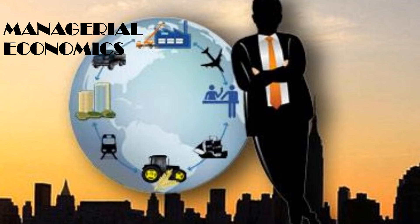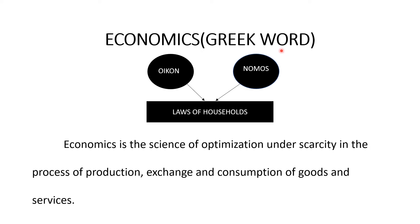Hi friends, I am here to explain the term managerial economics. Before going to the main topic, let us know what is meant by economics. The term economics has been derived from the Greek words 'oikos' and 'nomos'. Nomos means law, oikos means household, which together means law of households. Economics is the science of optimization under scarcity in the process of production, exchange, and consumption of goods and services.